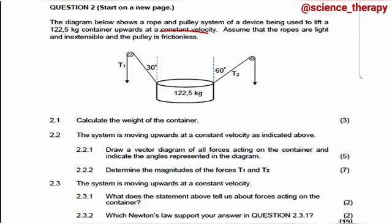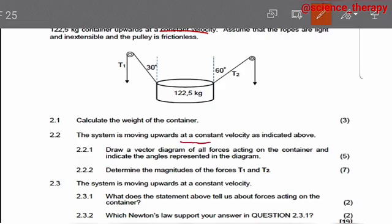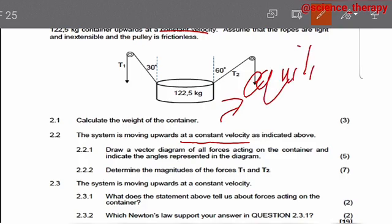Then 2.2 says the system is moving upwards at a constant velocity as indicated above. Draw a vector diagram of all forces acting on the container and indicate the angles represented in the diagram. Now remember we have the key word there, it's moving upward at constant velocity. But as a physical science learner, constant velocity is not just a word, it's a key word to you which tells us that the system is at equilibrium.